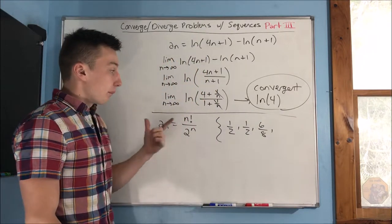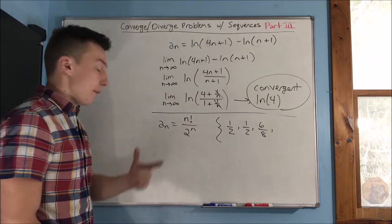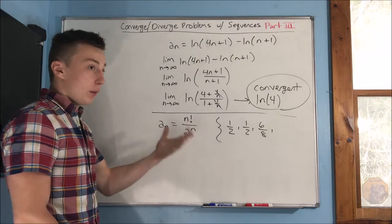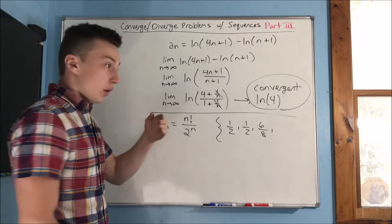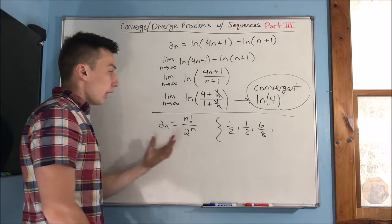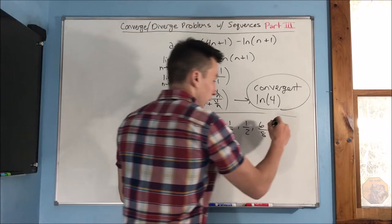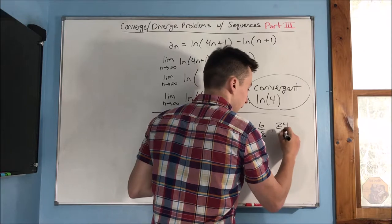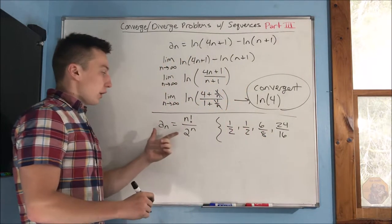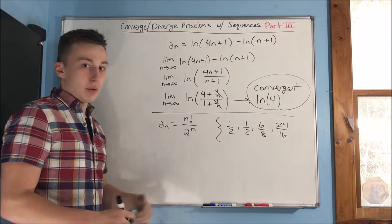Alright, then, what about 4 factorial? 4 factorial, that will be 4 times 3 times 2 times 1, which is going to be 24. And then you put that over 16, because that is 2 to the fourth power.